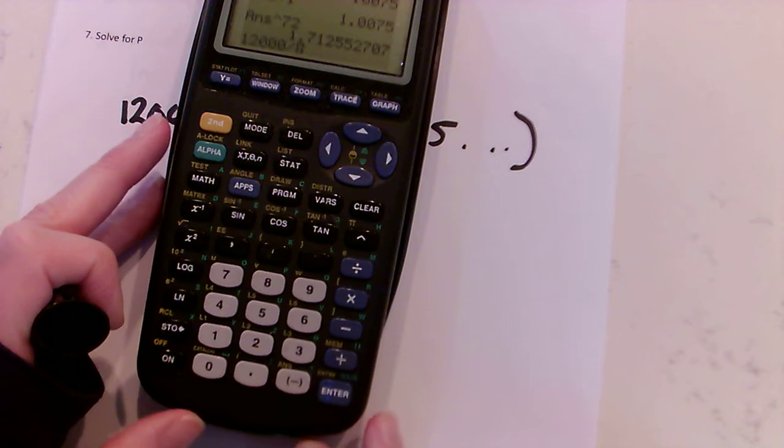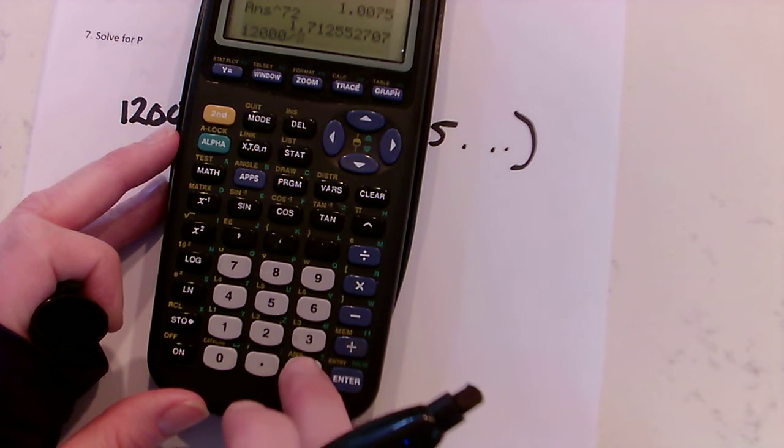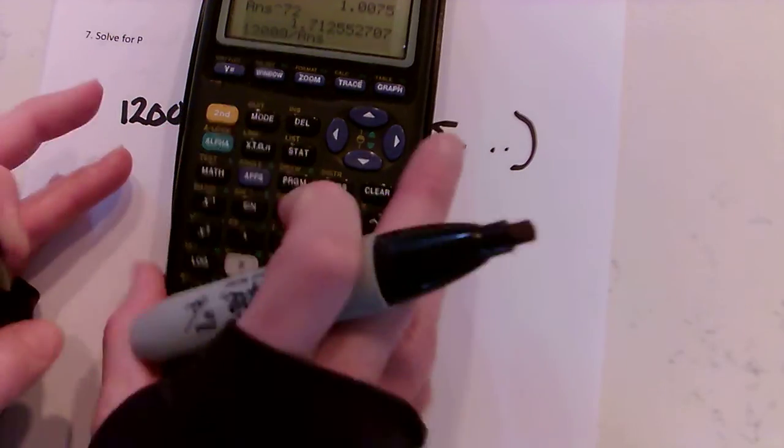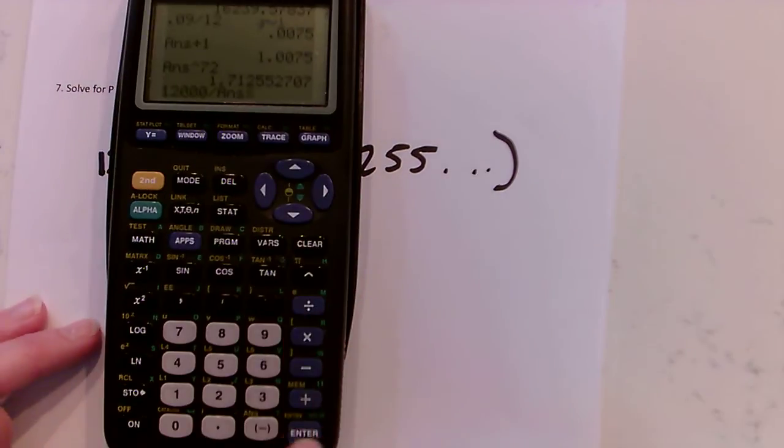To do that, I hit second and then at the bottom, ANS is above your negative here, so that's saying call back the last answer. So 12,000 divided by this is going to get me p.